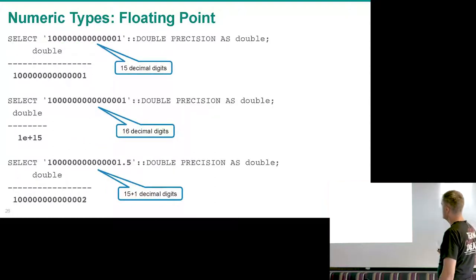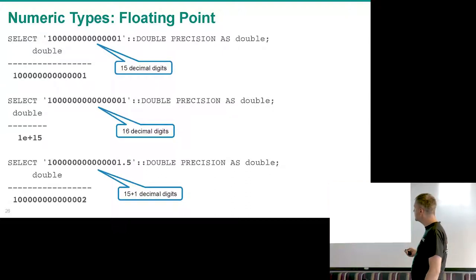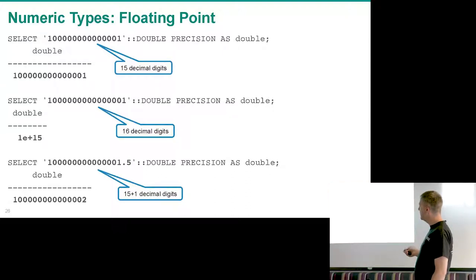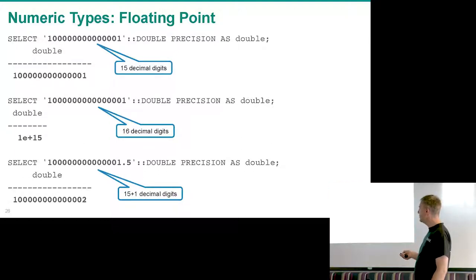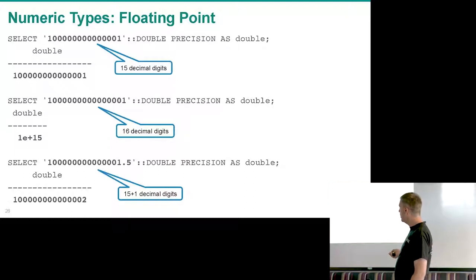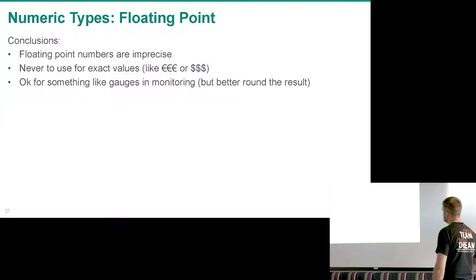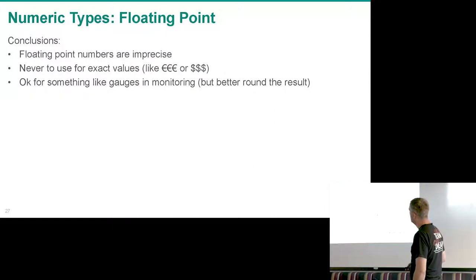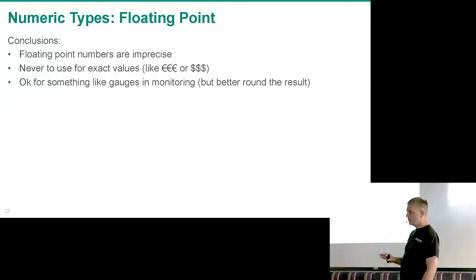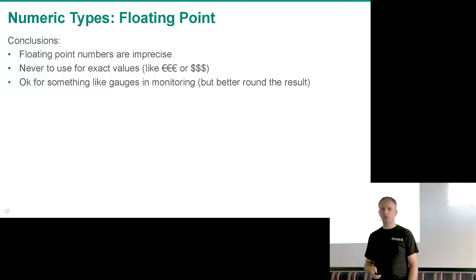The same rounding applies to double precision, which uses eight bytes. It looks exact with 15 digits, but expanding to 16 digits or having 15 digits plus one decimal digit causes rounding. Never ever store money or such values in a floating point number.